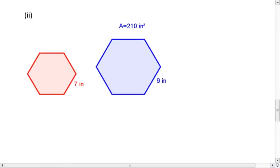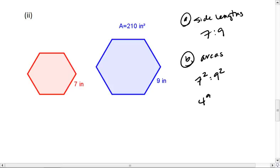How about this one? Our ratio of side lengths is 7 to 9, which means our ratio of areas is 7 squared to 9 squared, or 49 to 81.